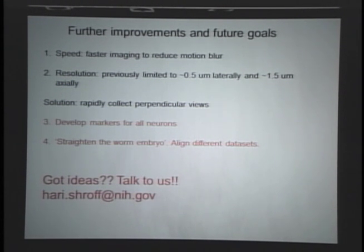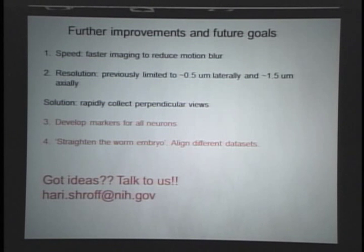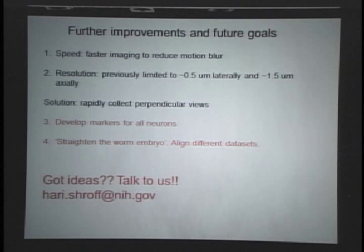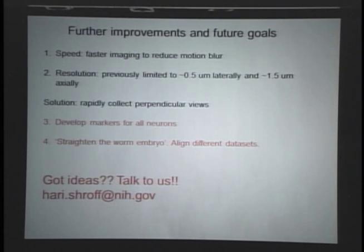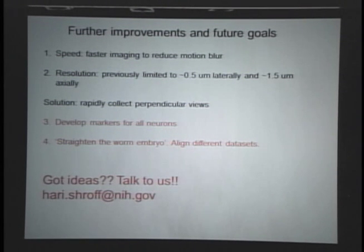These are two areas where we need help. The neural strain we built is one of only a few that has just a few neurons on, and we need to develop lines that have all 222 neurons marked sparsely. One way to do this is to employ photoactivatable markers that label all the neurons and then use a different color laser to activate just a few neurons. The other thing we need is to straighten the worm embryos, because although embryos have a stereotyped developmental program, twitching is stochastic. To compare one embryo to another, you have to align it along the common body axis. If you have ideas about this, please email us.